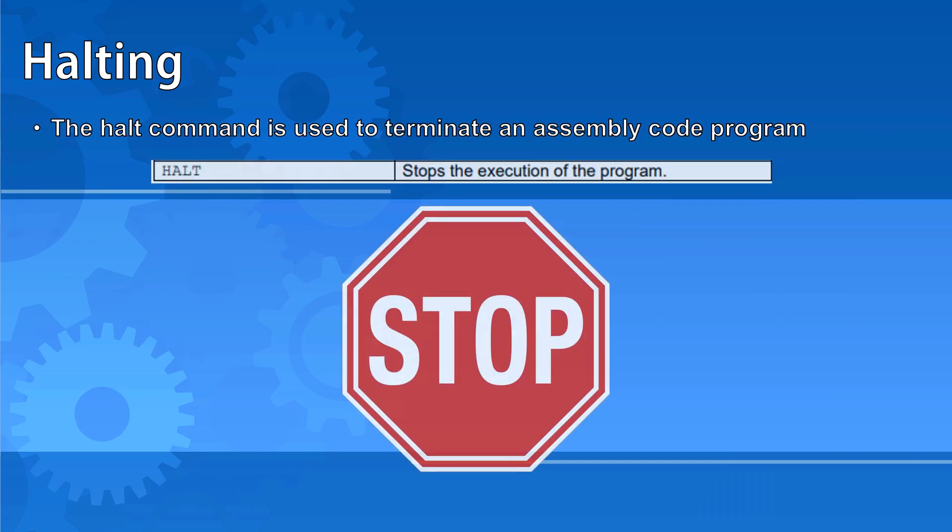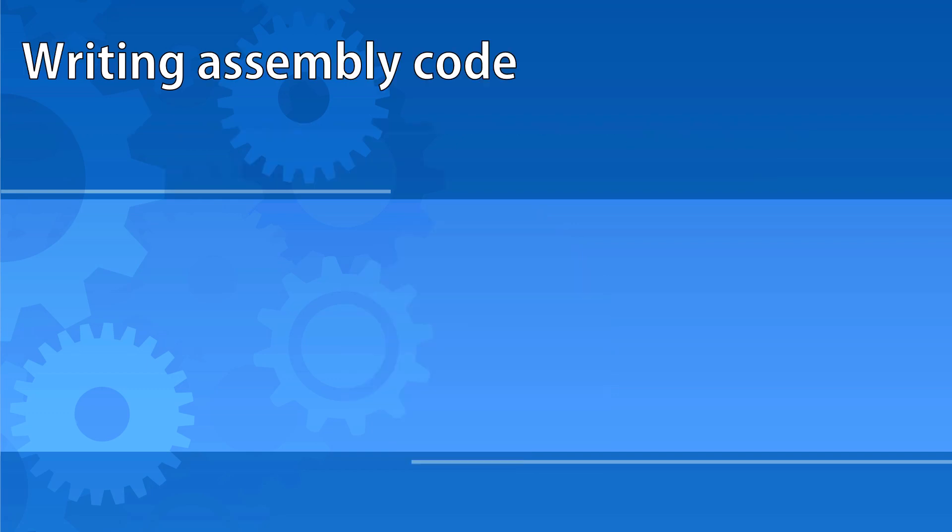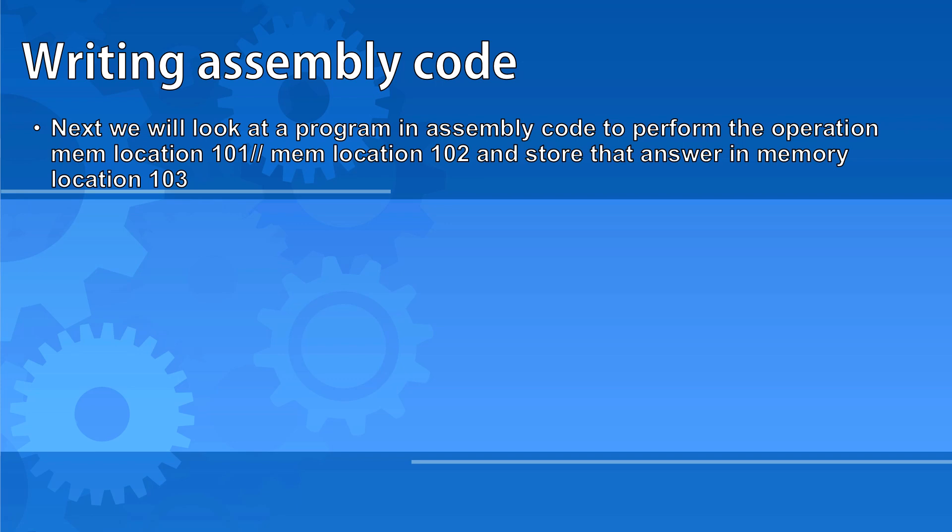The HALT command is used to terminate an assembly code program. Now let's take a look at an entire program. In this example, I'm looking to write a program in assembly code to perform the operation to take the value from memory location 101 and perform floor division with the value from memory location 102, and then store the answer to that sum in memory location 103.